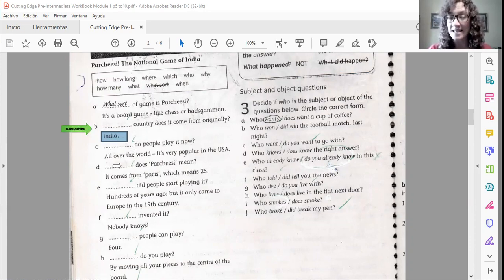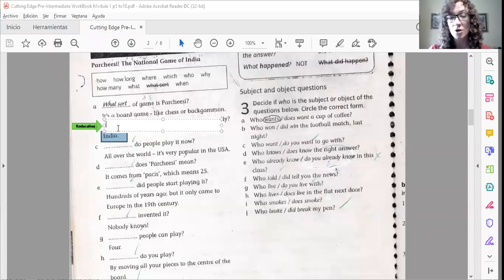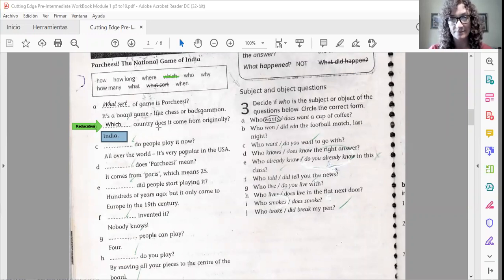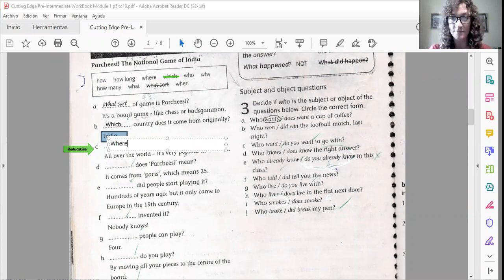Now let's go with letter B. Which country does it come from originally? And the answer is India. So the question word to this question could be which or what, both are grammatically okay. Letter C. Where do people play it now? And the answer is all over the world, it's very popular in the USA. So the correct question word would be where because the answer is a place.